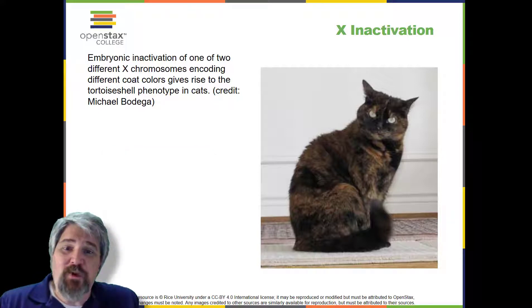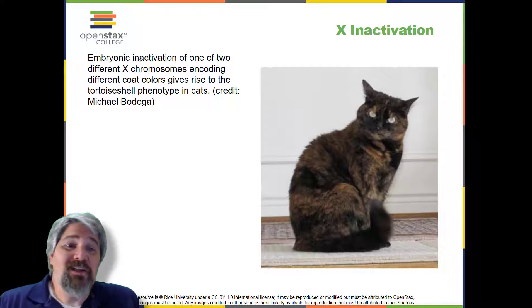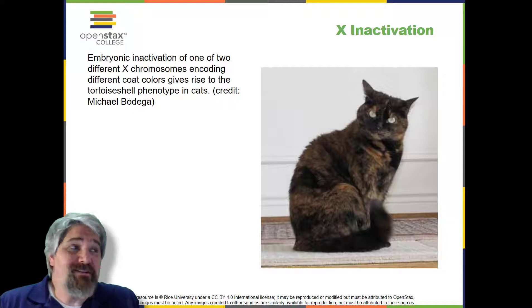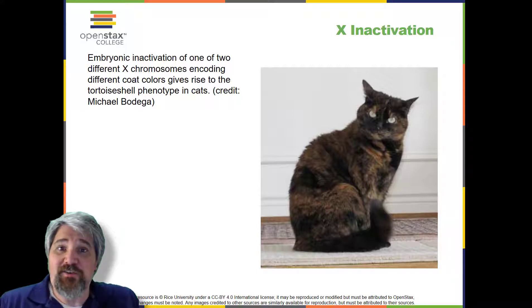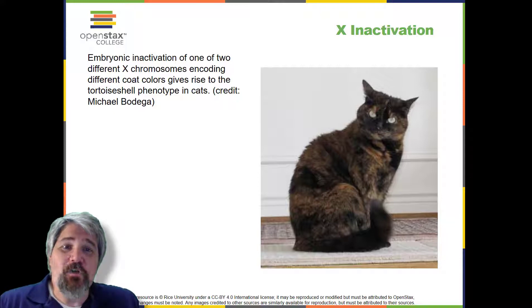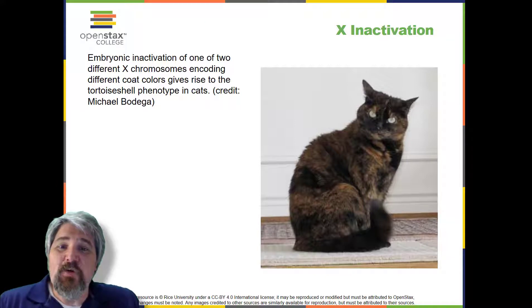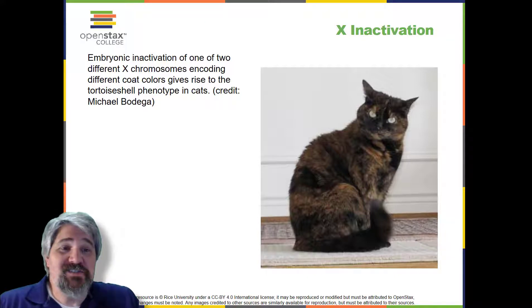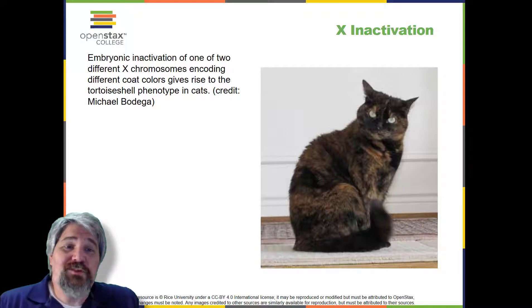The genes on the inactive X chromosome are not expressed. The particular X chromosome — maternally or paternally derived — that is inactivated in each cell is random. But once the inactivation occurs, all cells descended from that cell will have the same inactive X chromosome. By this process, females compensate for their double genetic dose of X chromosome. In so-called tortoiseshell cats, X inactivation is observed as coat color variegation.